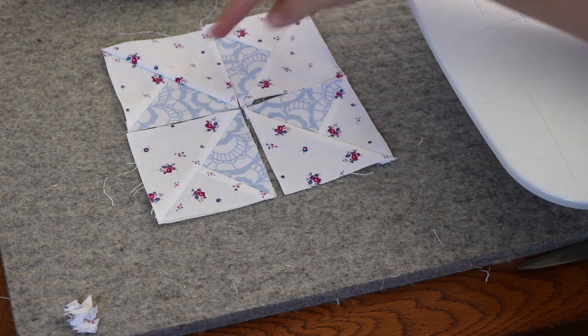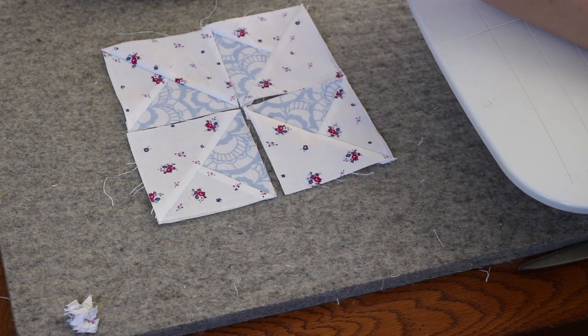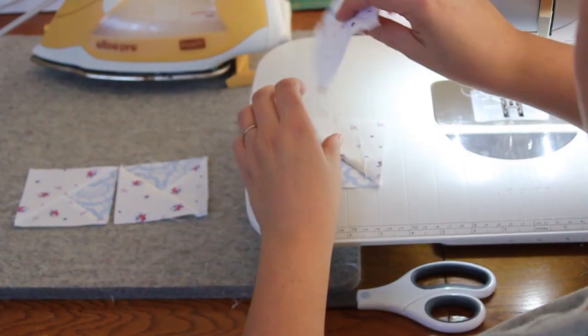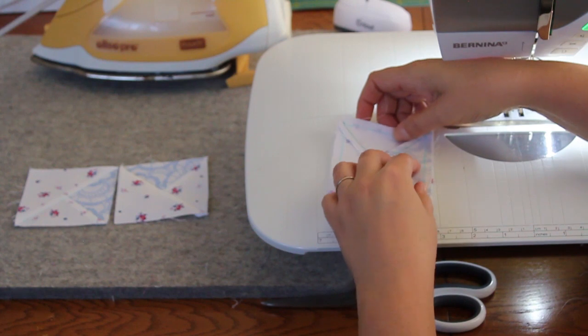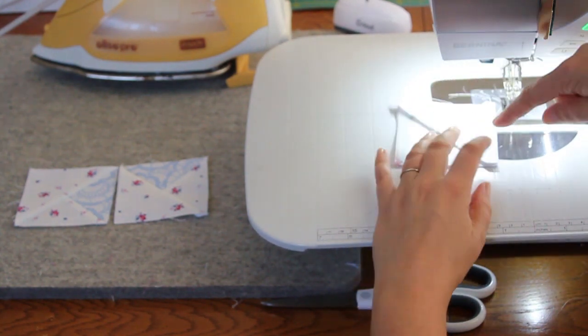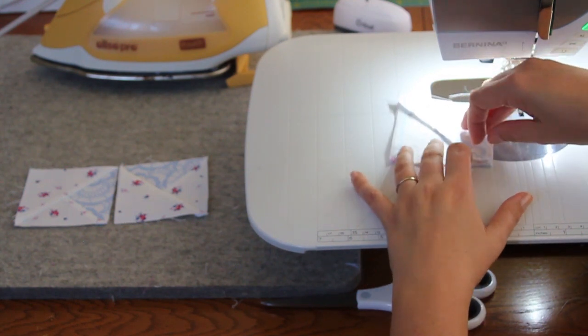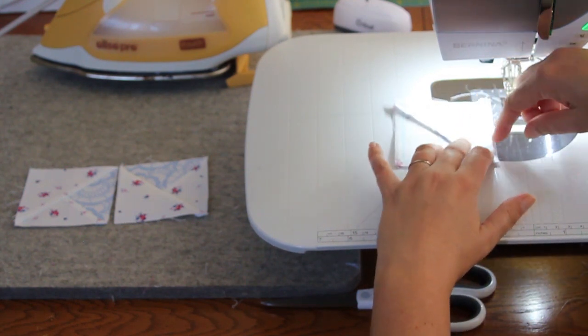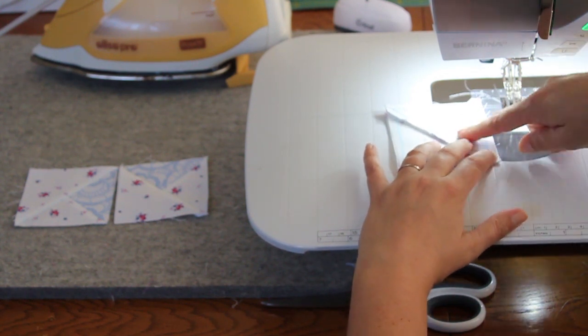There we go, the quilt block's coming together. I need to stitch these two together and these two together to make my rows and then we'll stitch the rows together. This seam right here nests with the seam behind it here, so with your fingers feel where they nest and you'll get a much better point in the middle where your pinwheel comes together.